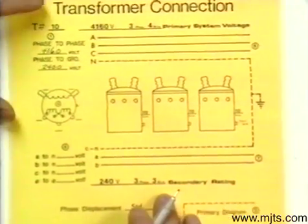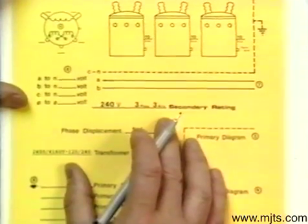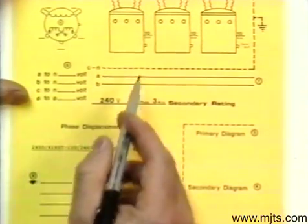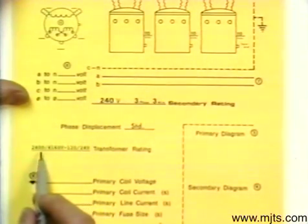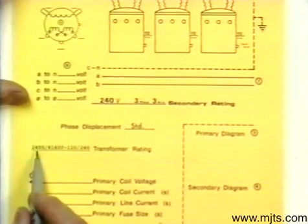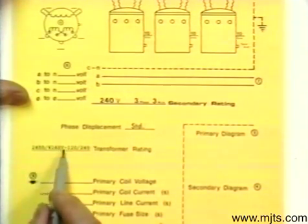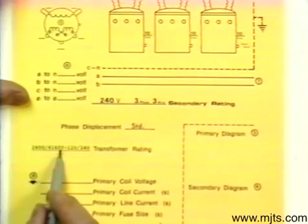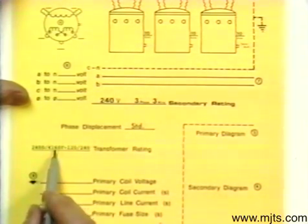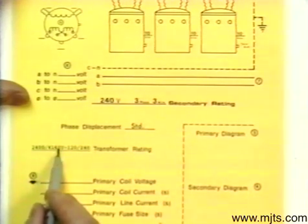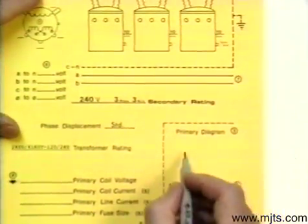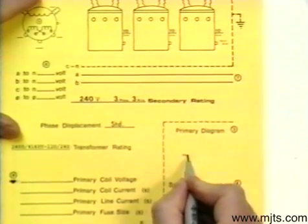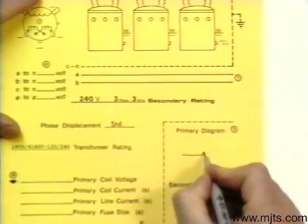Now we've got transformers here. The rating of those transformers, they're 10 kVA each. We have a high side rated at 2400, 4160 Y. And that tells us then that if we have a 4160 system we connect it Y. So we need a Y diagram on the high side.